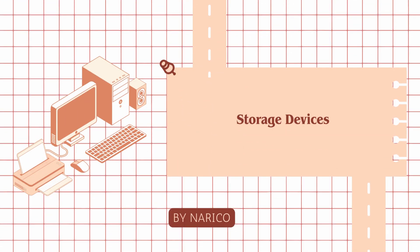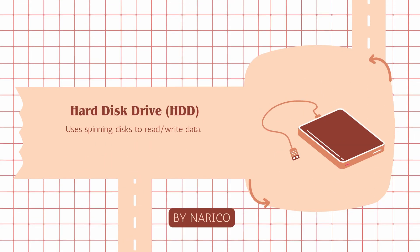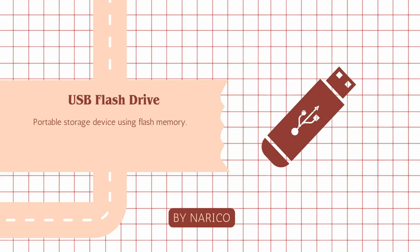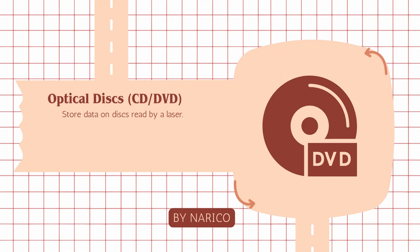Storage devices store data and information for long-term use. Hard disk drive, HDD: uses spinning disks to read/write data. Solid state drive, SSD: uses flash memory for faster data access. USB flash drive: portable storage device using flash memory. Optical disks — CD, DVD: store data on disks read by a laser.